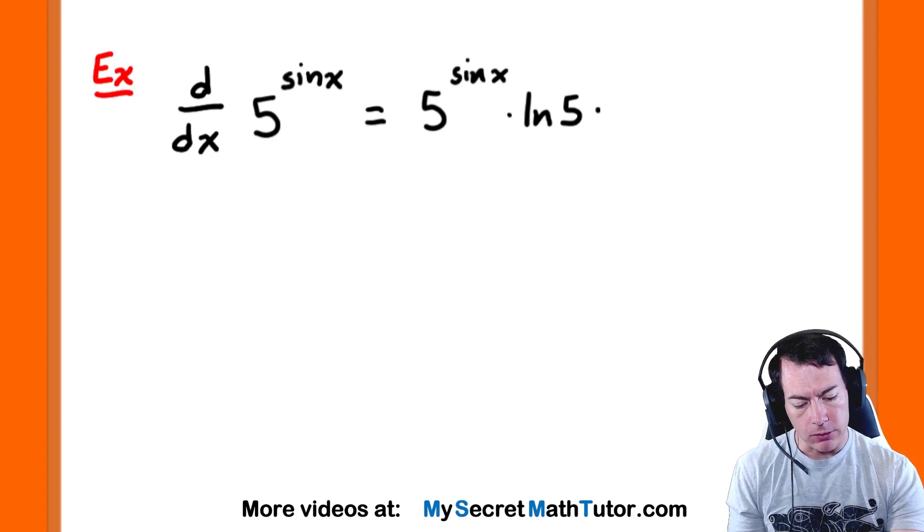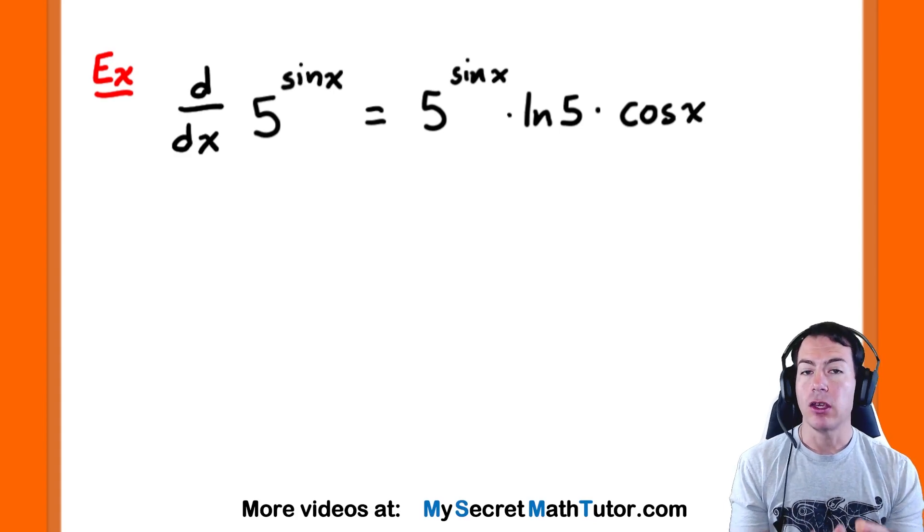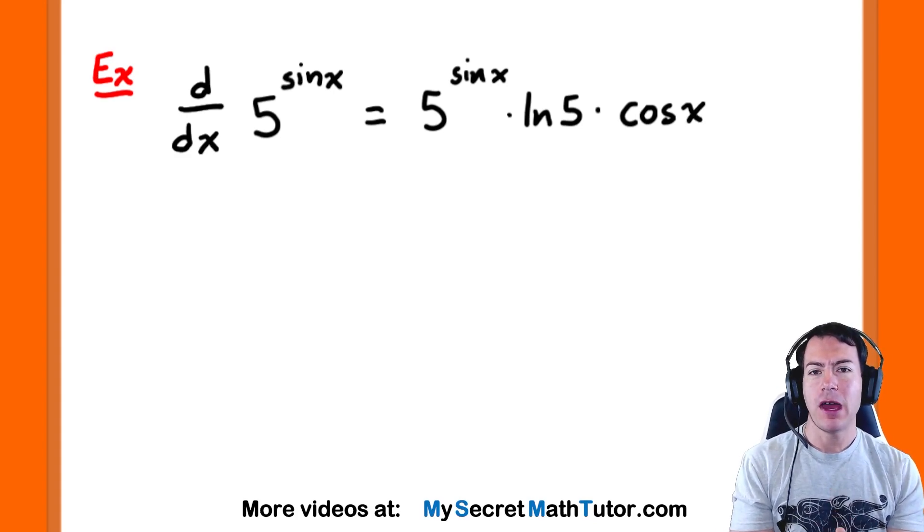Now we will multiply by the derivative of the inside. Since our inside function is sine, we're going to multiply by cosine of x. And there you go, that would represent the derivative of 5 raised to the power of sine of x.